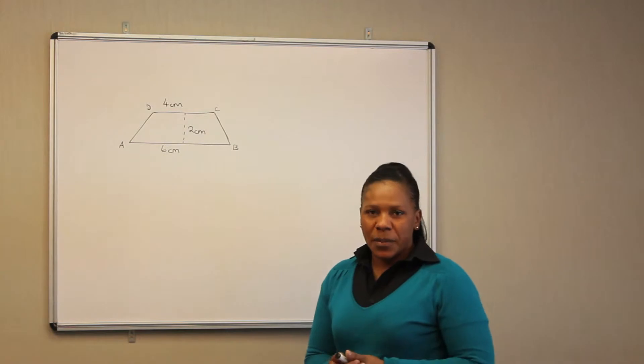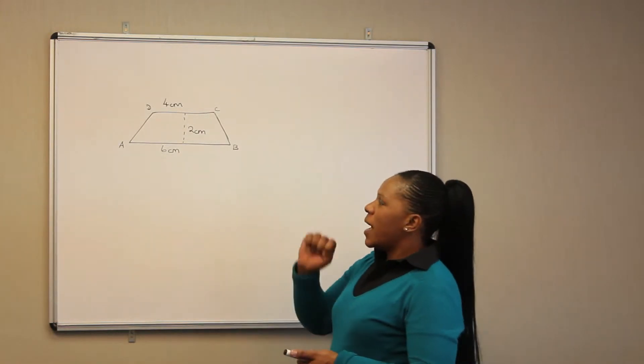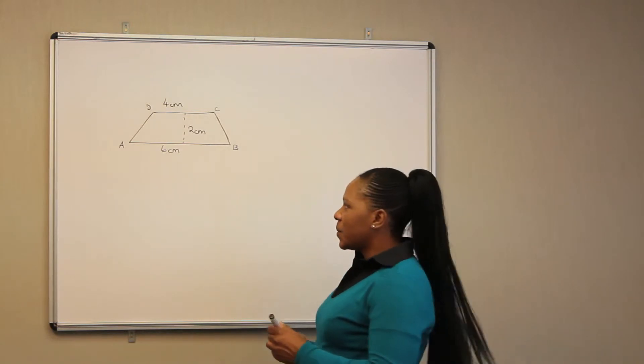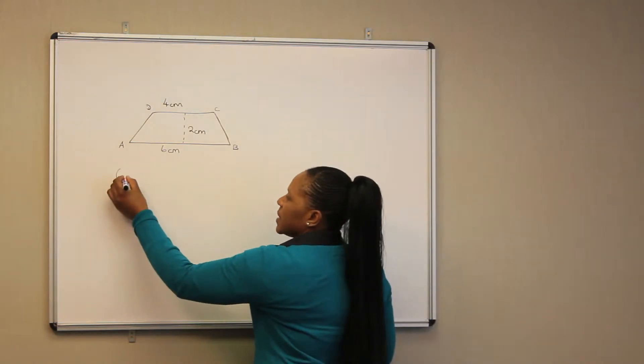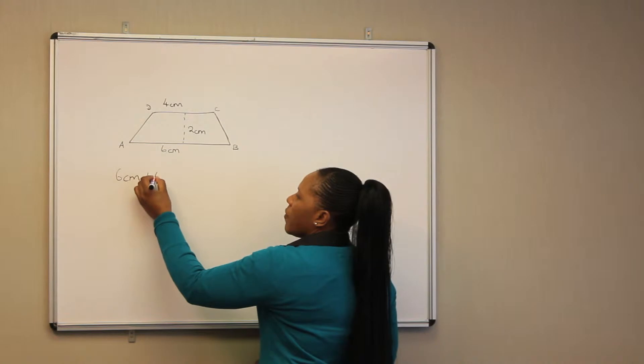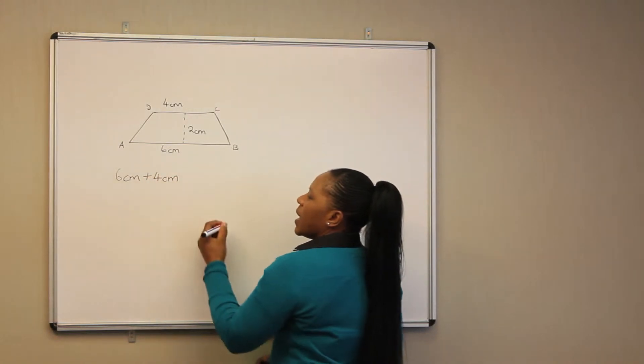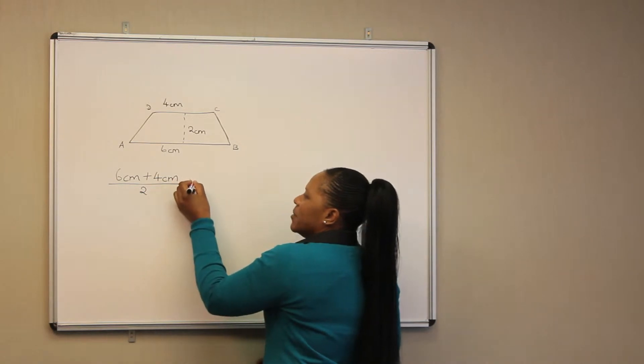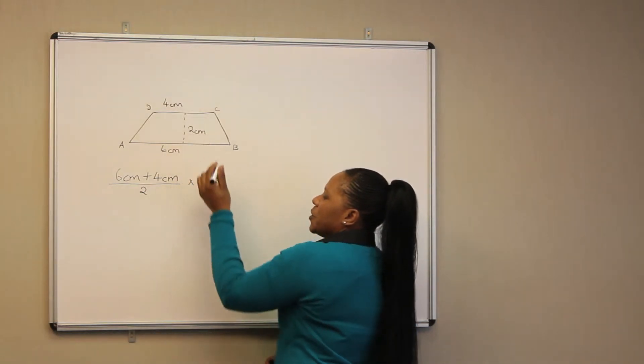Finding the area of a trapezium, we are going to add the two bases together. That is 6 cm plus 4 cm, and we divide them by 2 and multiply by the perpendicular height, which is 2 cm.